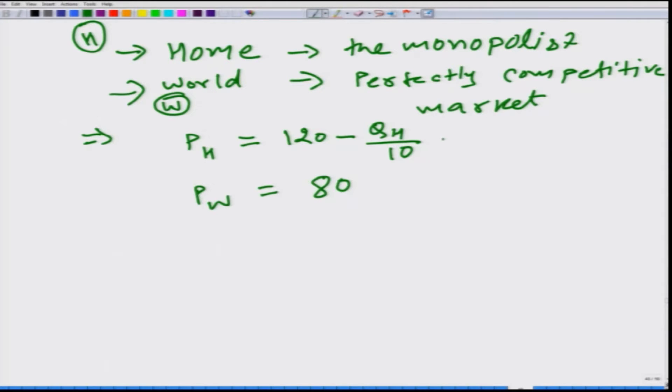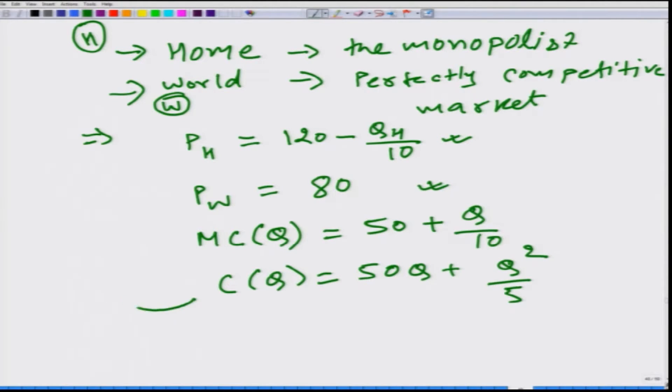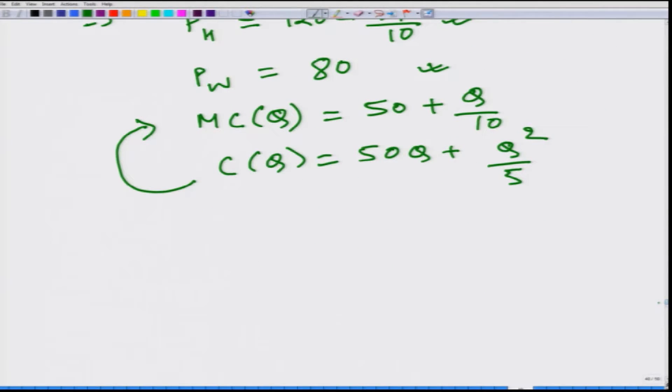This firm is monopolist in home market and one of the many firms in the world market. And let us say that the marginal cost to produce Q units of output is 50 plus Q by 10 or we can say that cost is 50Q plus Q square by 20. This should give us this marginal cost, so it is very clear that there is no fixed cost in this particular problem. Sorry this should have been 20, now it is correct.